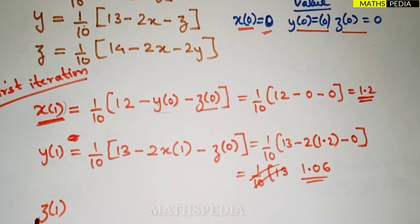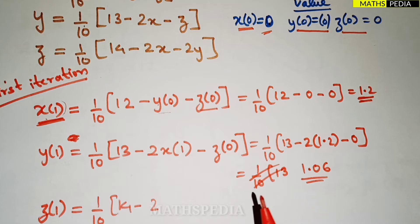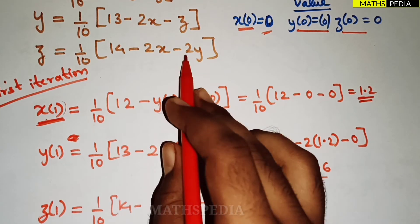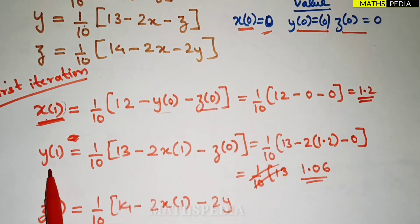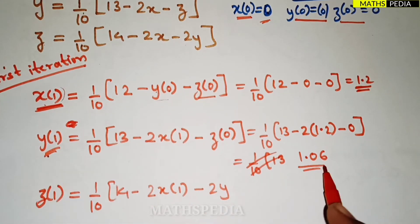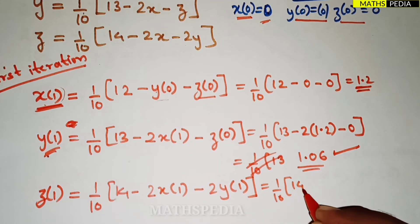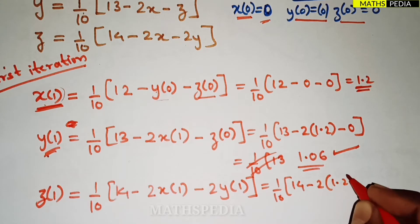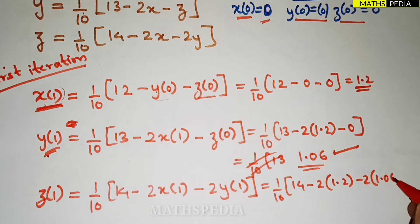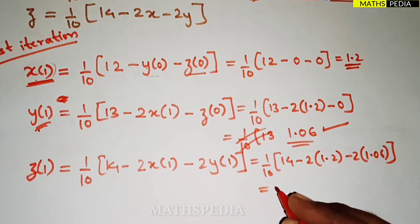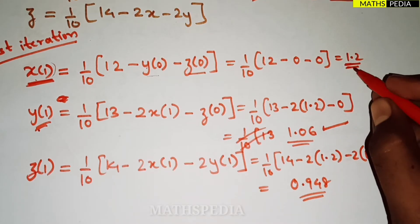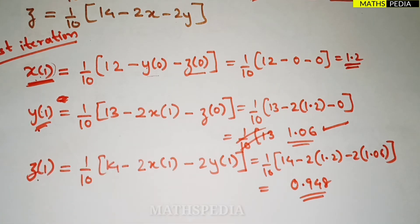Now z(1) = (1/10)(14 − 2·x(1) − 2·y(1)). I use x(1) = 1.2 (latest x value) and y(1) = 1.06 (latest y value). Substituting: z(1) = (1/10)(14 − 2(1.2) − 2(1.06)) = 0.948. So the first iteration is complete: x(1) = 1.2, y(1) = 1.06, z(1) = 0.948.